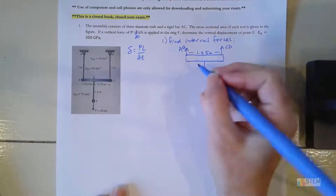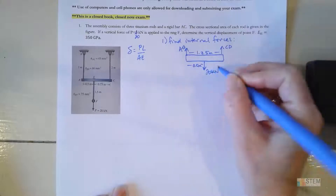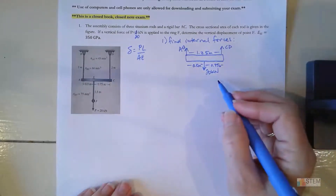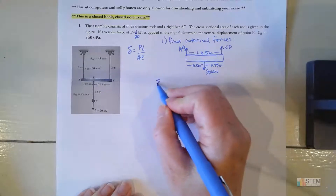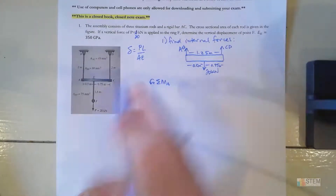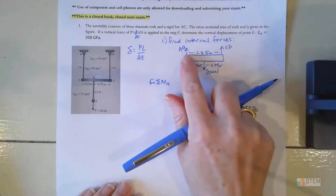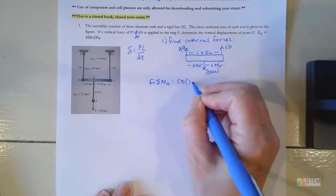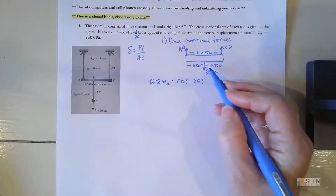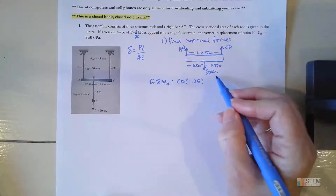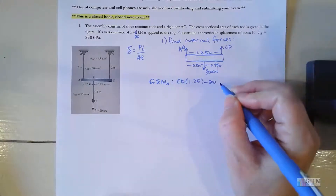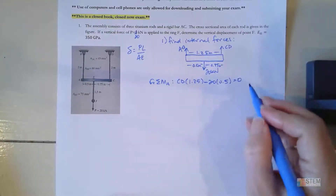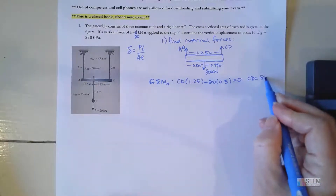Now let's look at our equilibrium equations. I have two unknowns, so I need two equations. Let's do the moment equation first, taking the moment about point A with counterclockwise positive. That gives a positive CD times 1.25, and then the 20 kilonewton force provides a negative (clockwise) moment at a distance of 0.5. Setting that equal to zero and solving gives CD = 8 kilonewtons.